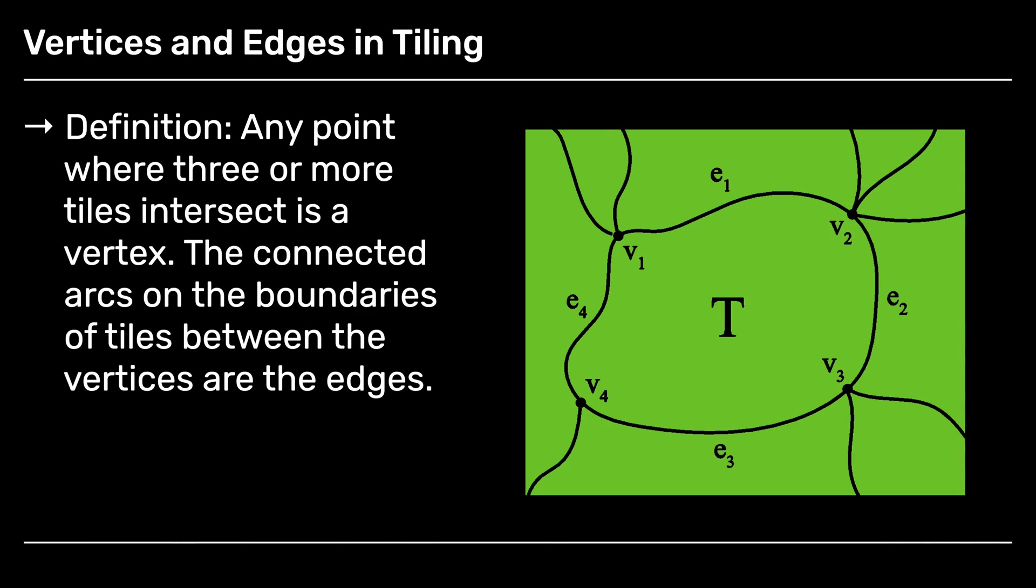We need another two definitions. Definition: any point where three or more tiles intersect is a vertex. The connected arcs on the boundary of a tile that are separated by vertices are called the edges. This tile here has four vertices and four edges. If you think about it for a little while, it's always the case that the number of vertices on the boundary of a tile equals the number of edges on the boundary of the tile.